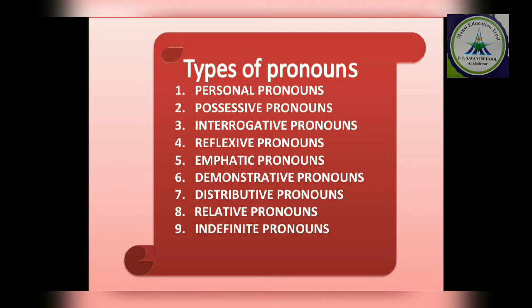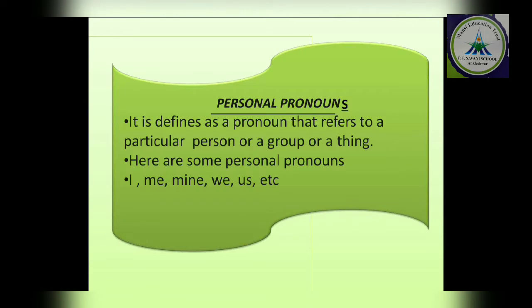Let's start with the first type, that is personal pronoun. The word 'personal' means relating to a person — the type of word used for us. So we can define it as a pronoun that refers to a particular person, group, or thing. The words used for a particular person or thing are known as personal pronouns. For example: I, me, my, us.